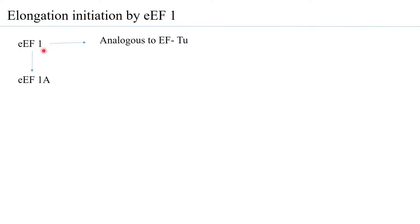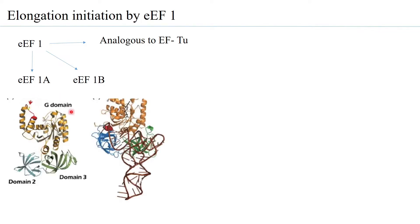Elongation factor 1 has two main counterparts: EF1A and EF1B, and within EF1A itself there are two sub-forms. EF1A has three domains: the G domain, domain 2, and domain 3. The G domain is made up of several helices along with a few beta sheets, while domain 2 and domain 3 are primarily composed of beta sheets. This is comparable to EF-Tu, where the GTP binding domain and GTPase activity of EF-Tu is similar to the G domain of EF1A.